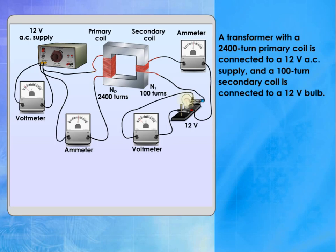A transformer with a 2400 turn primary coil is connected to a 12 volt AC supply, and a 100 turn secondary coil is connected to a 12 volt bulb.